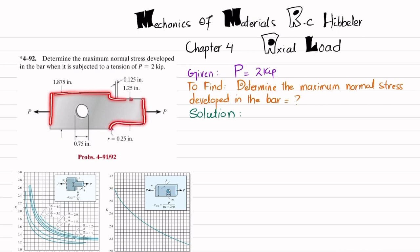You can see this is the bar, and the P load axial load is applied with a magnitude of 2 kips. There is a hole and fillet in this bar, so due to this hole there will be stress concentration. There will be maximum stresses in this region as well as in the region of the fillet.